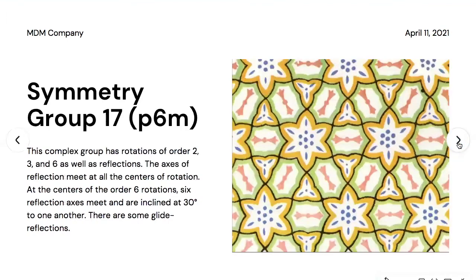Symmetry group seventeen is named P6M. This complex group has rotations of order two, three, and six, as well as reflections. The axes of reflection meet at all the centers of rotation. At the centers of the order-six rotations, six reflection axes meet and are inclined at 30 degrees to one another. There are also some glide reflections.